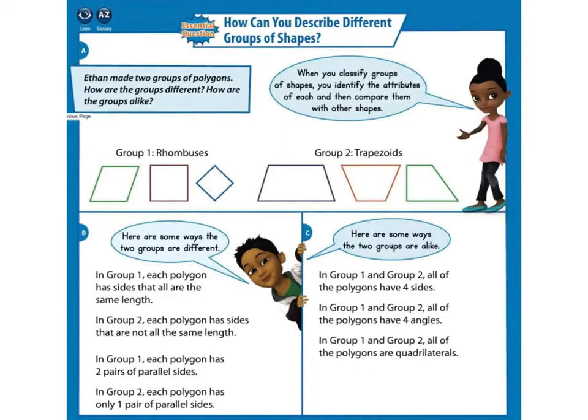Ethan made two groups of polygons. How are the groups different? How are they alike? When you classify groups of shapes, you identify the attributes of each and then compare them with other shapes. These are rhombuses. Remember, rhombuses have four equal sides.